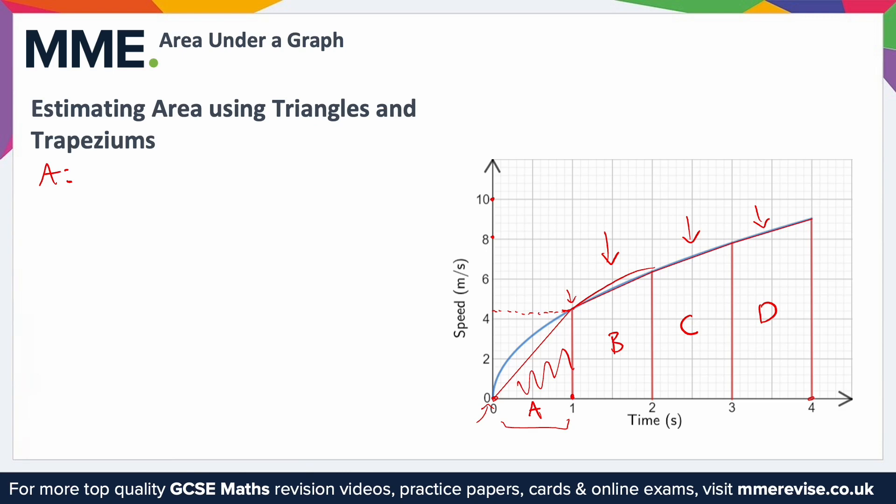So this line here corresponds to 4.4. So we have a triangle with a height of 4.4 and a width of 1. To work out the area of that, we're going to do 1 times 4.4, and then remember for a triangle we have to half it like that, so that's 2.2.